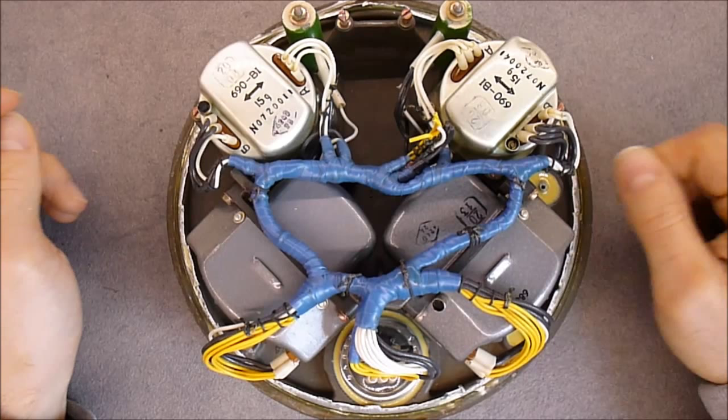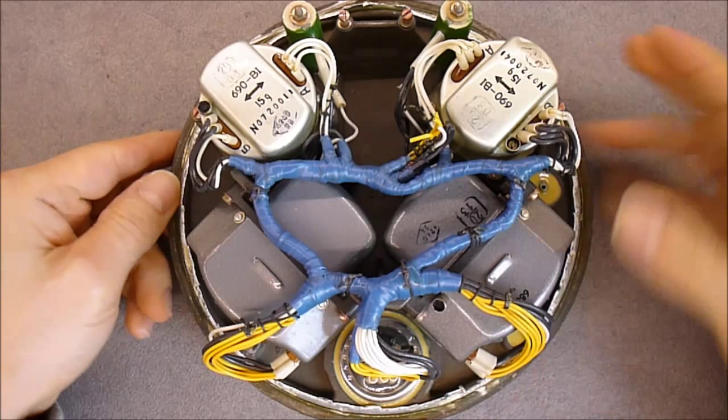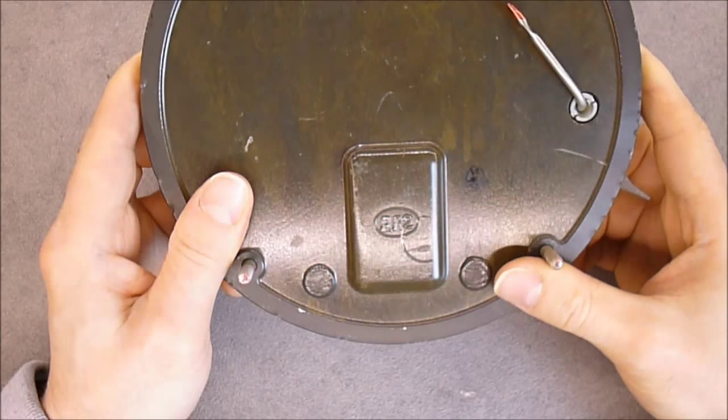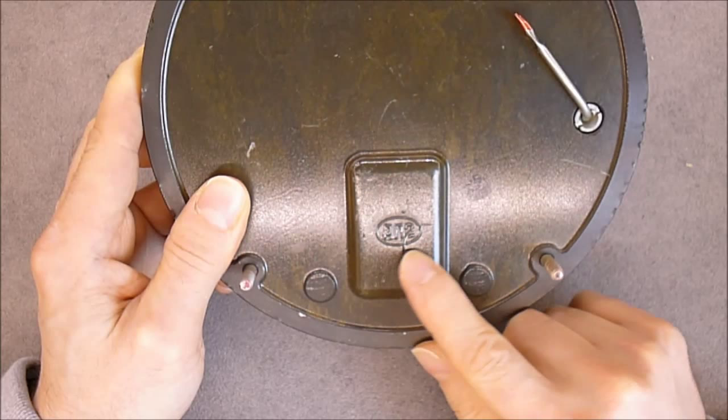So first about the structural plate. Here we have an aluminum disc. As you can see, we have a die-cast aluminum with some logo here. It must be either the factory logo or the material. It says AL2 in Cyrillic.